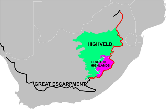The Highveld constitutes almost the whole of the Free State and Gauteng provinces, and portions of the surrounding areas, the western rim of Lesotho, and portions of the Eastern Cape, Northern Cape, North West, Limpopo, and Mpumalanga provinces of South Africa.